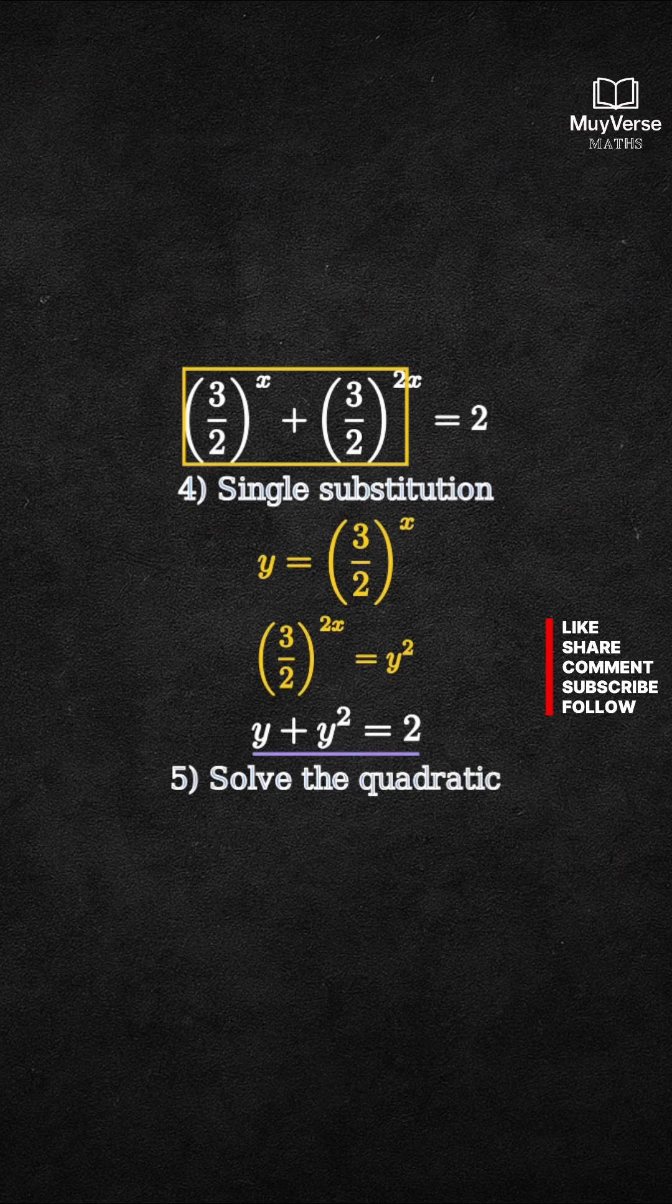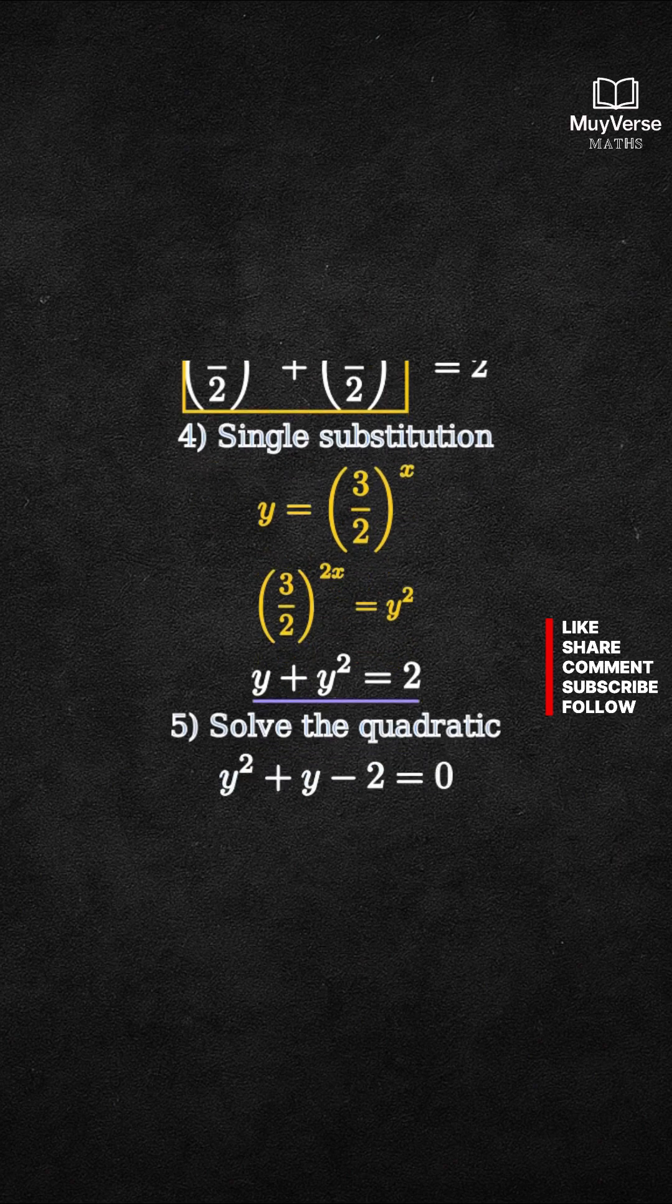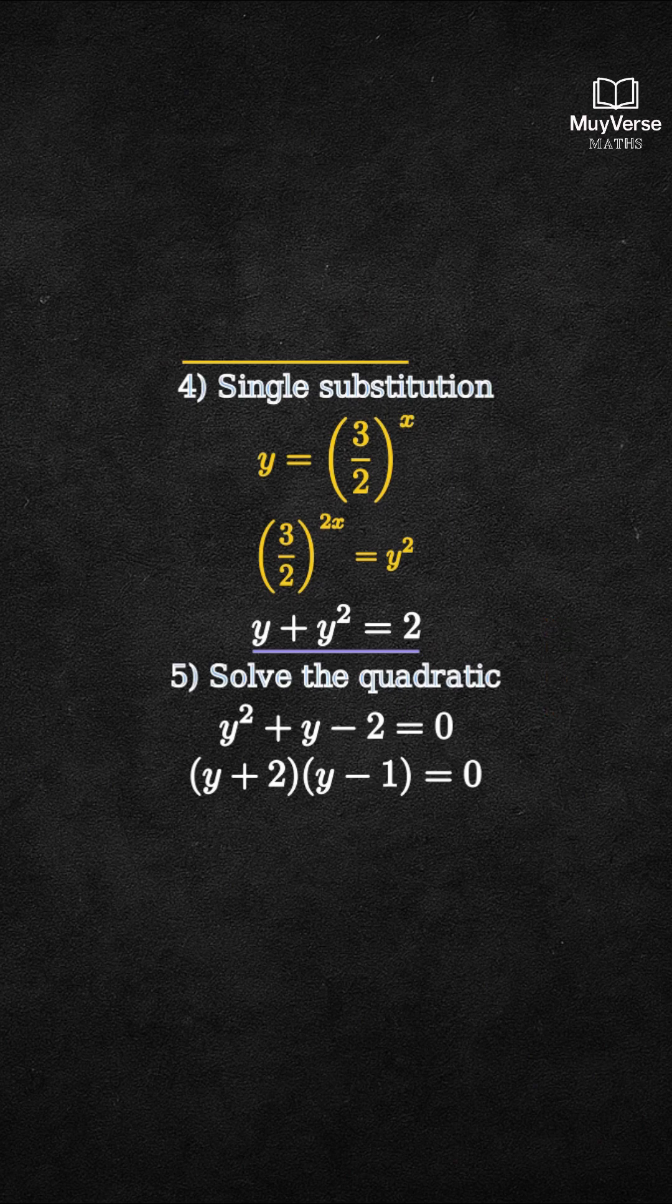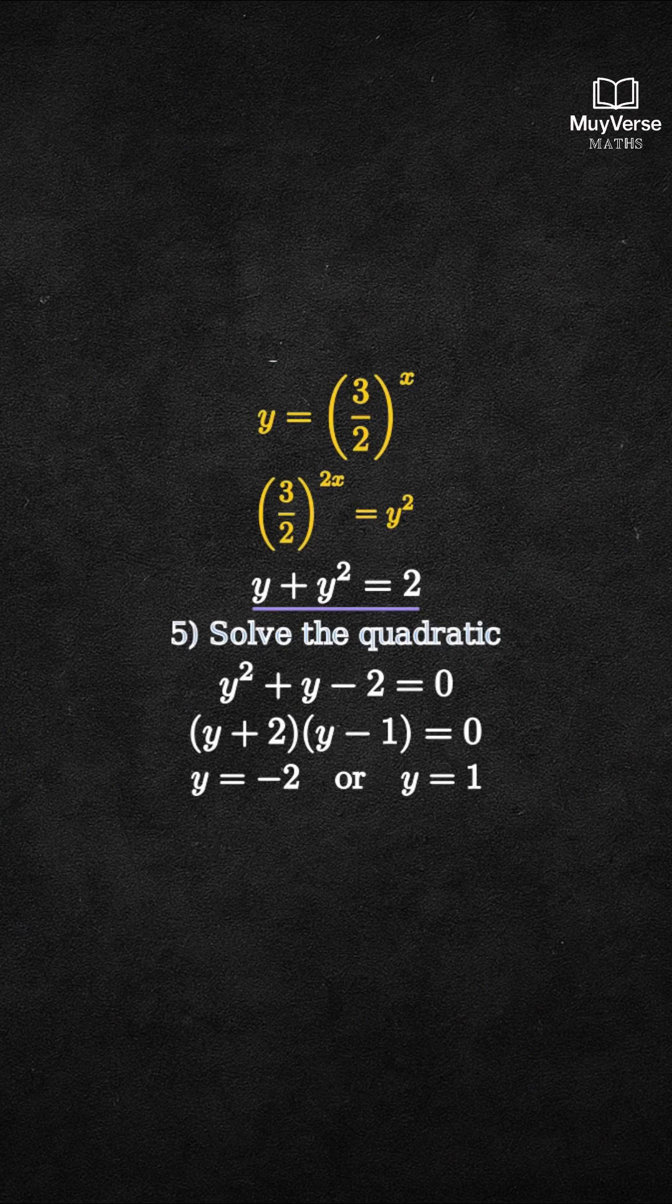Step 5. Move everything to one side. We get y squared plus y minus 2 equals 0. Factor the quadratic. Left parenthesis y plus 2 right parenthesis times left parenthesis y minus 1 right parenthesis equals 0. So y equals negative 2 or y equals 1.